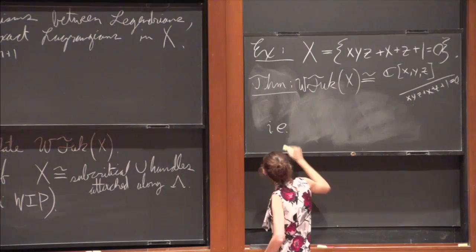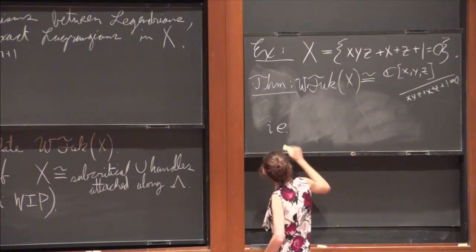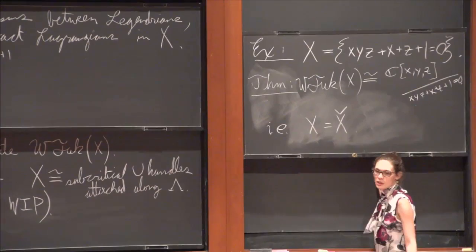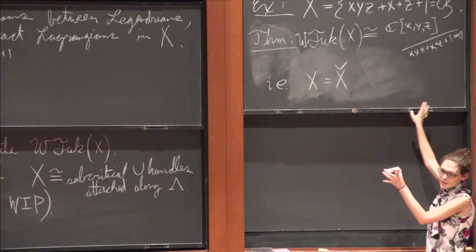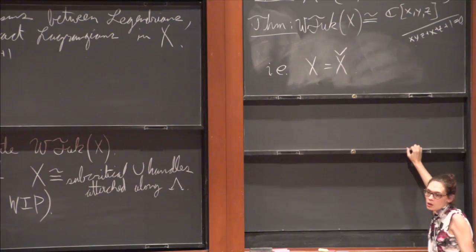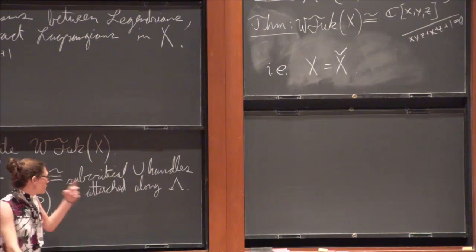And so this is kind of essentially saying that X is self-mirror, right? Because in the case where the wrapped Fukaya category is a commutative algebra, then you kind of just take the mirror by taking a spec of it. Particularly since we're in the affine world here, and we're kind of only interested in grading zero things, and so the structure sheaf is going to generate.